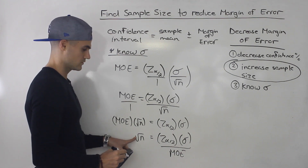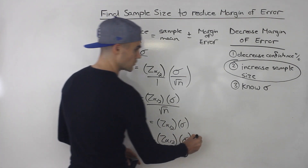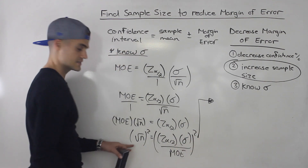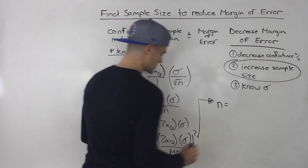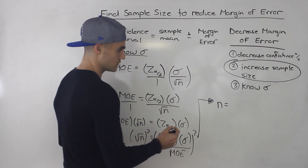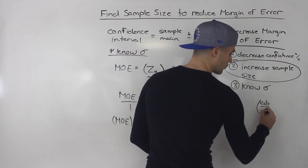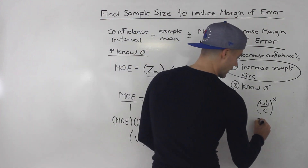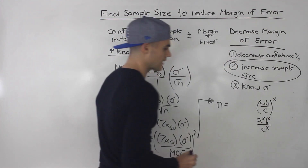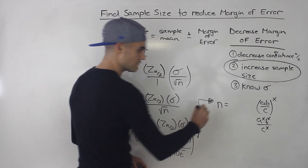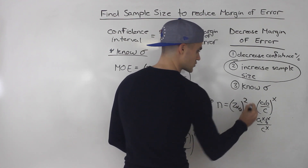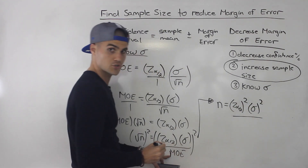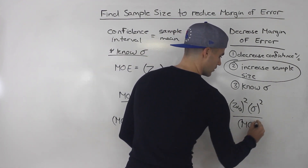Notice this is the square root of n, and we want n by itself. So we square both sides to get n by itself. Then n equals — and when you have an exponent on the outside, everything in the numerator and denominator goes to that power. So the z value alpha over 2 would be squared, the standard deviation would be squared, and the margin of error that we're given would be squared as well.